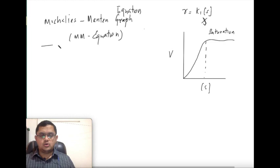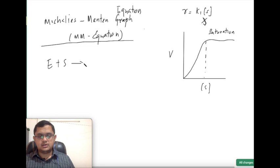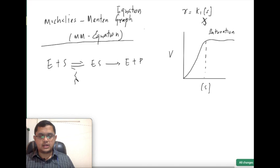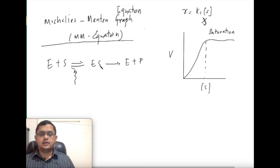Today we are going to discuss how to develop the MM equation. For the MM equation, we take a reaction like this: an enzyme converts a substrate to form an enzyme-substrate complex, then it forms enzyme plus product. This particular reaction is reversible — if the product is not formed, the enzyme-substrate complex destabilizes and reverts to the original substrate — whereas the conversion of enzyme-substrate to enzyme plus product is irreversible.